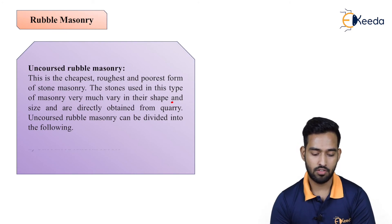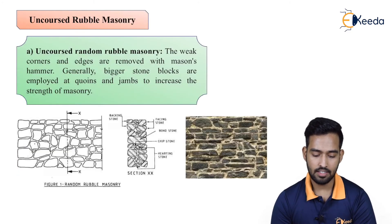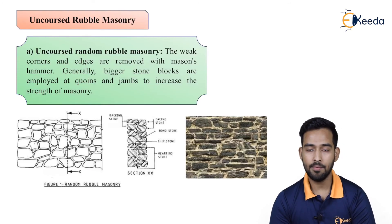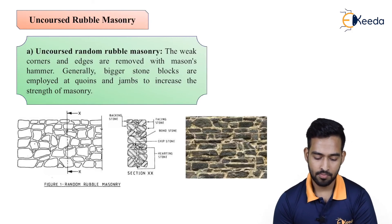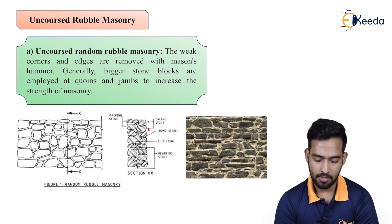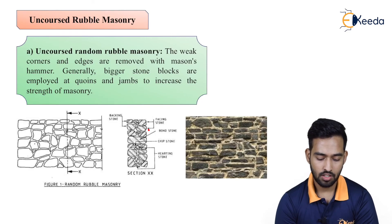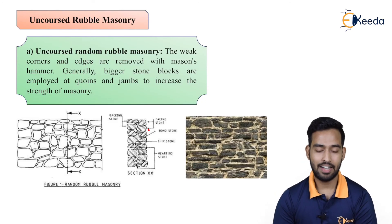In uncoursed random rubble machinery, as you can see in the figure, the weak corners and edges are removed with a mason's hammer. Generally bigger stone blocks are employed at quoins and jambs to increase the strength of the machinery. In cross section you can see the facing stones, then bond stones which are throughout stones as discussed, then small cheap stones, and then hearting stones. In such a way we use random stones — that is what is known as uncoursed random rubble machinery.